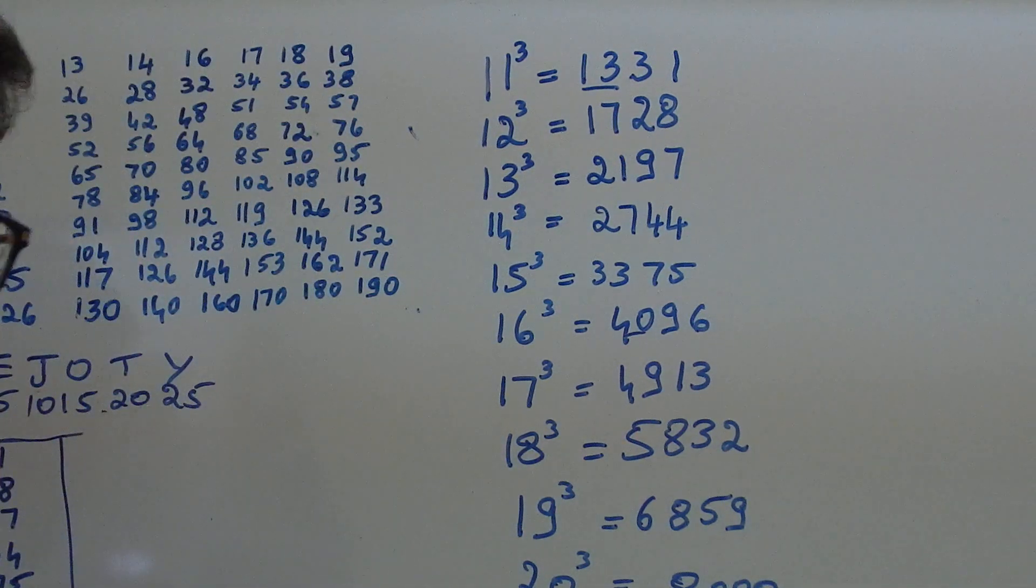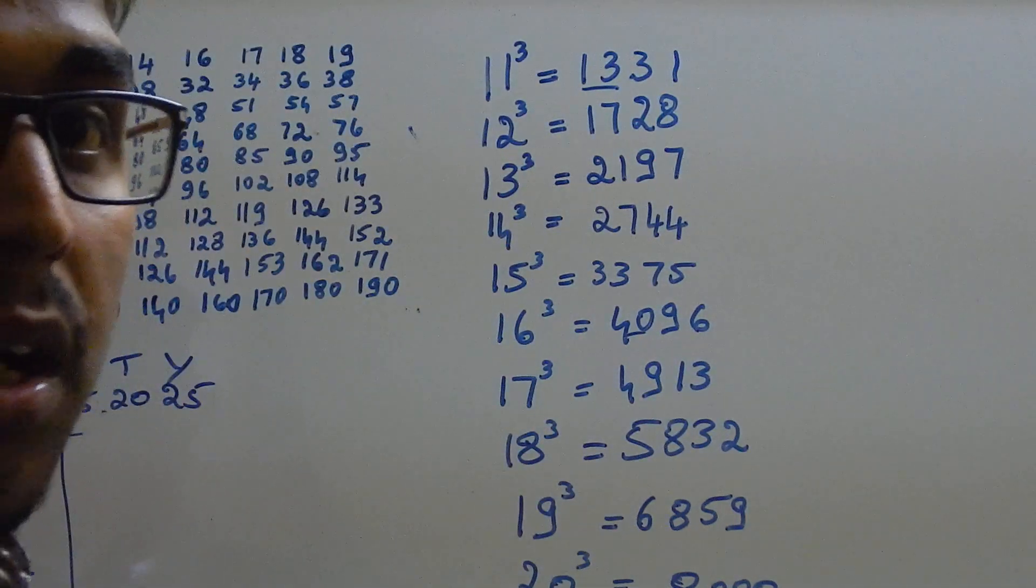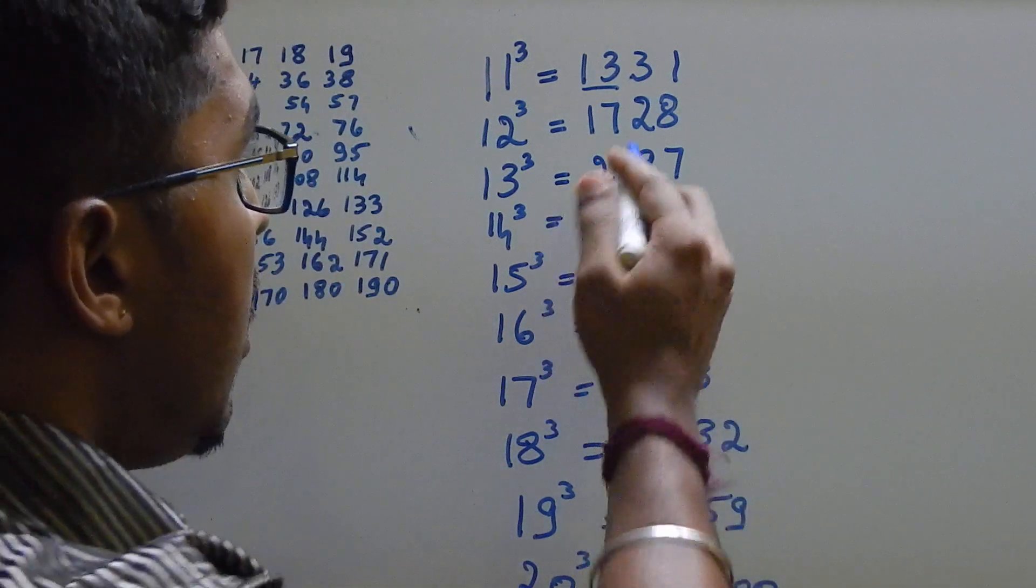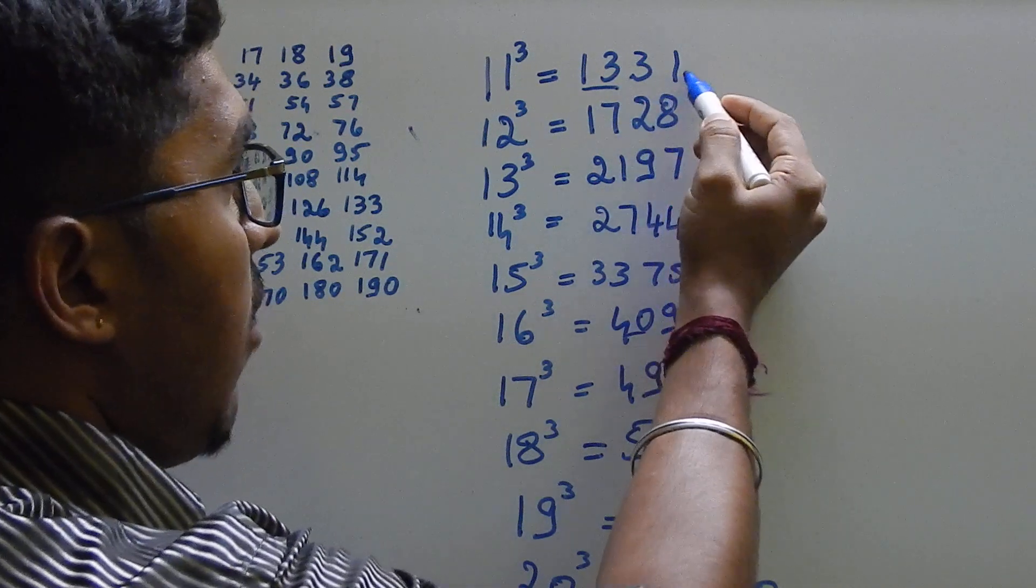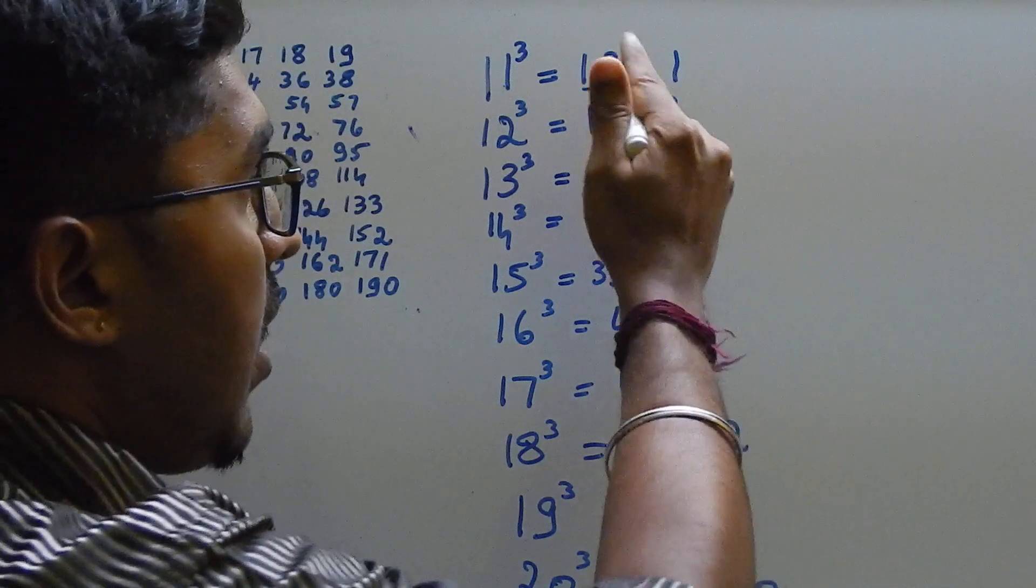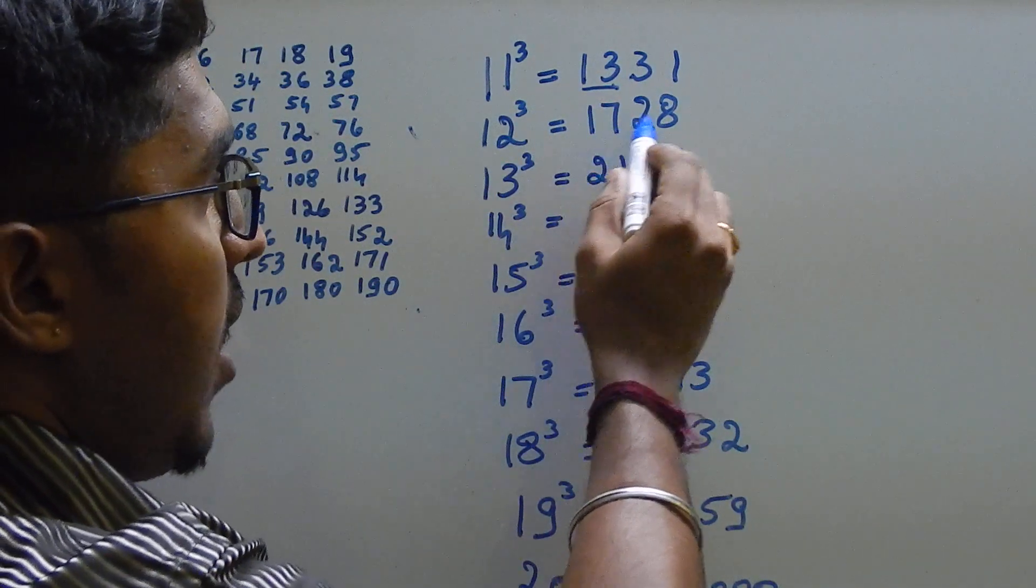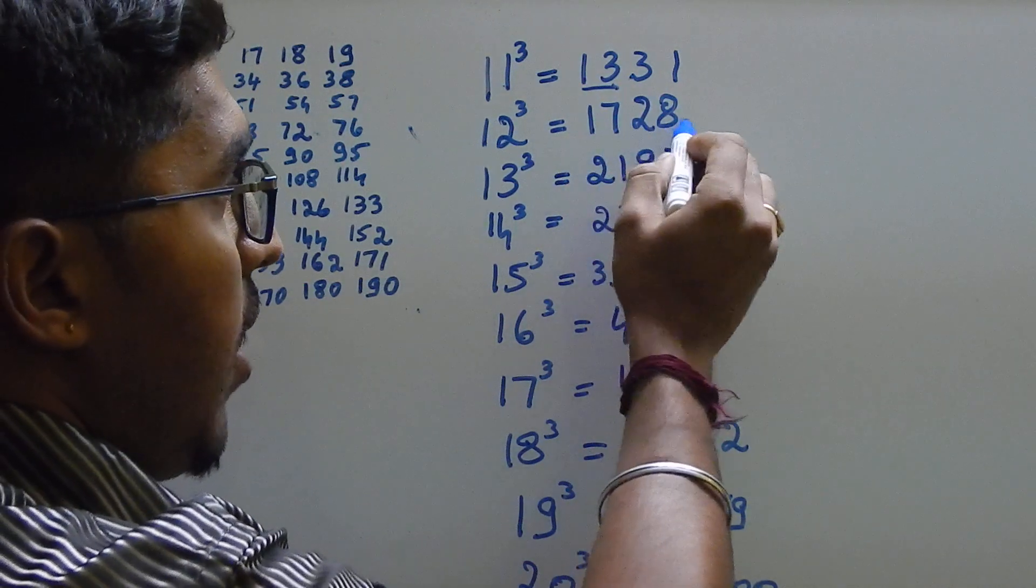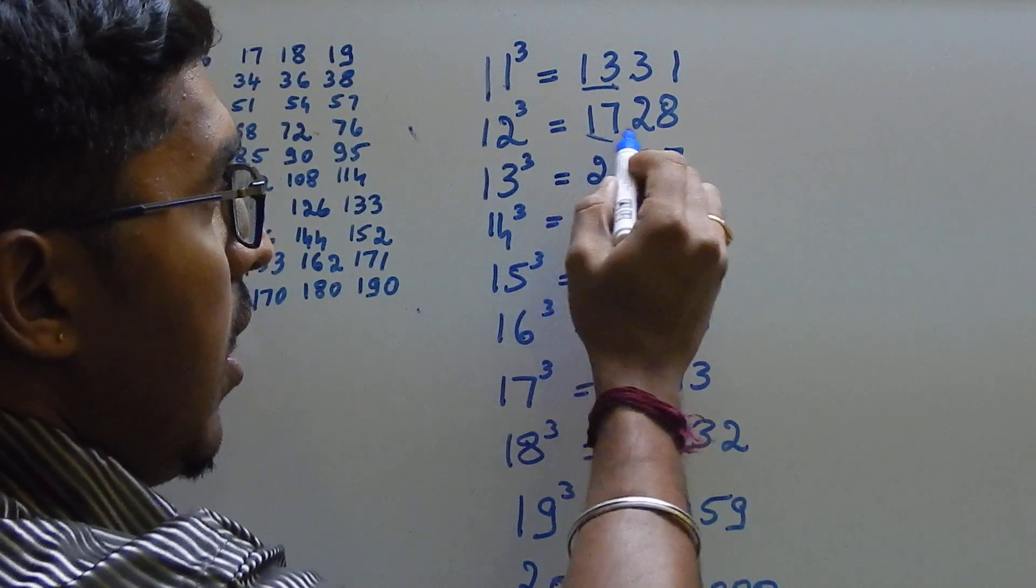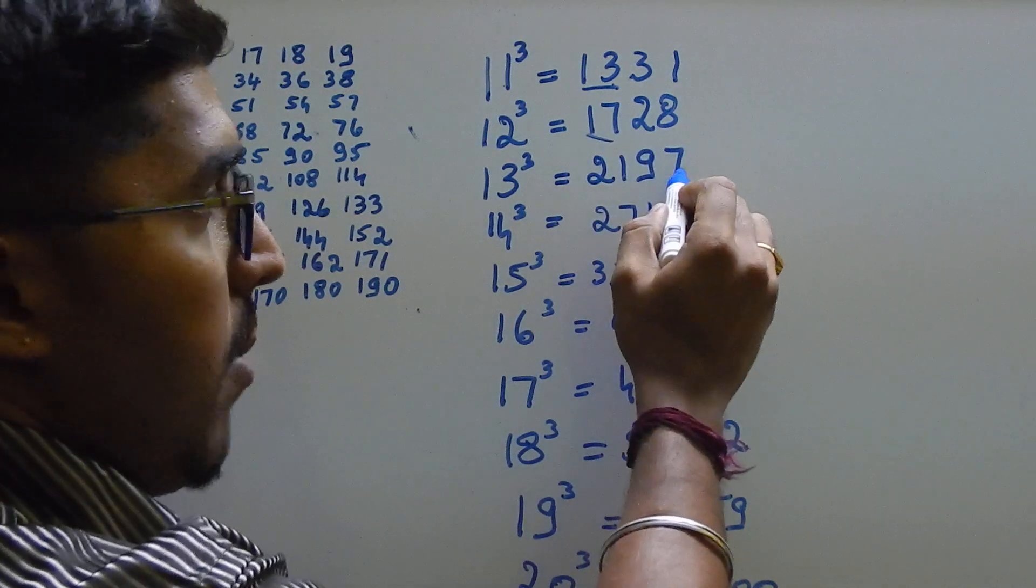So, this is it. Again, if you want explanation again. Here, 1331, 11 cube. 13 and reverse of the 31. 12 cube. It is 1728. Add 4 to 13. 17, 28. Next, 13 cube. Again, add 4 to 17. It will be 21, 97. Adding 90 to 17, it will become 97.